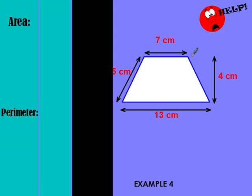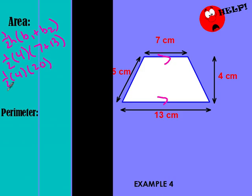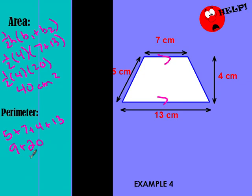We have a trapezoid now. You need to make sure which sides are your bases — those are the ones that go parallel to each other. Go ahead and pause it, come back when you're ready. So this is half times height times base 1 plus base 2. The height goes straight up from the base, so it's going to be one-half times 4 times (7 plus 13). Doing order of operations — parentheses first: 7 plus 13 is 20. Half of 4 is 2, and 2 times 20 is 40. Perimeter: 5 plus 7 plus 4 plus 13 — 7 and 13 make 20, 5 and 4 is 9, so we get 29 centimeters.